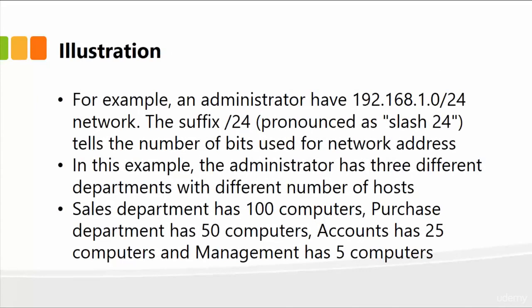Let's walk through an illustration. For example, you're the administrator and you have the IP address 192.168.1, which is a class C IP address from the previous lessons, and then the slash 24 network. The suffix slash 24 simply tells the number of bits used for the network address. In this example, the admin has three different departments with different numbers of hosts: the sales department has 100 computers, the purchase department has 50 computers, the accounts department has 25 computers, and the management department has only five computers.